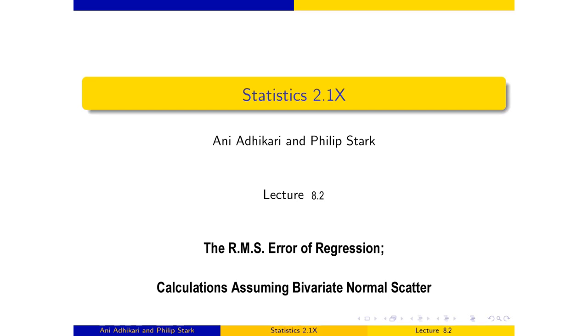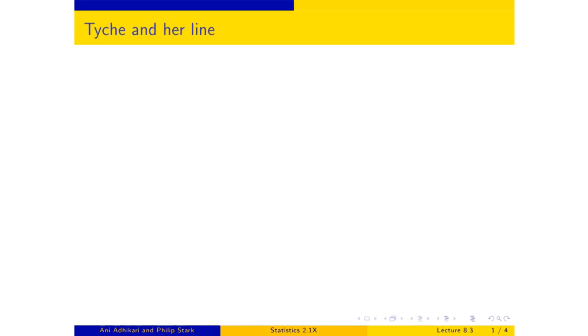We're coming to the end of STAT 2.1x, which is a course in descriptive statistics, and you have seen regression as descriptive statistics describe the line that appears to go through this scatter diagram.